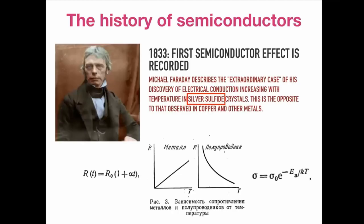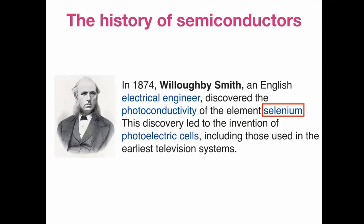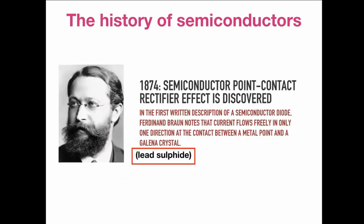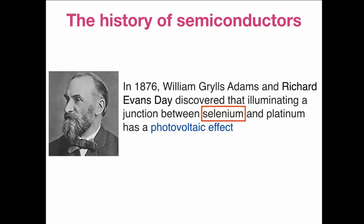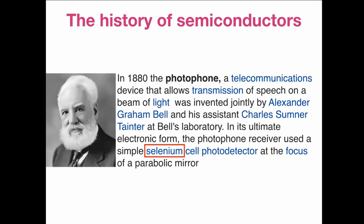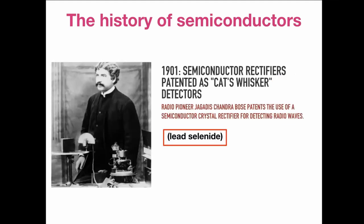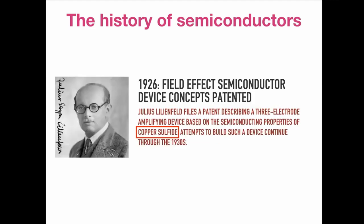The first semiconductor effect — the characteristic temperature dependence of conductivity — was observed by Faraday in 1833 using silver sulphide. Photoconductivity was observed by Smith on selenium. The rectification effect was discovered on lead sulphide, and the photovoltaic effect was discovered using selenium. Selenium was also used in Bell's first photodetector, and the field effect semiconductor device concept was patented for chalcogenide materials.